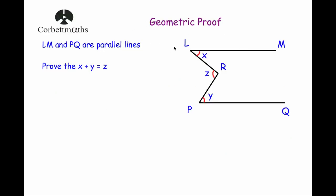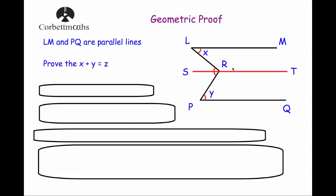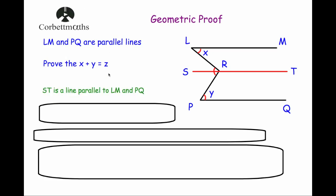Our next question: we've been told that lines LM and PQ are parallel lines, and we've been asked to prove that X plus Y is equal to Z. Whenever I look at this diagram I'm thinking of alternate angles. With point R and the line going to another line it's a bit trickier, so what I'm going to do is draw a horizontal line passing through R that's parallel to the top and the bottom — I'll call that line ST. So I draw line ST and write down that ST is a line parallel to LM and PQ, marking the parallel arrows on the diagram.